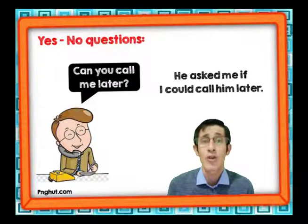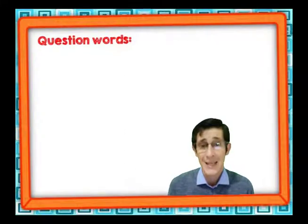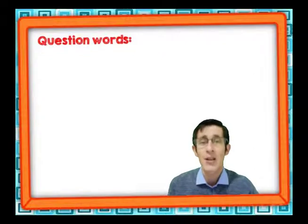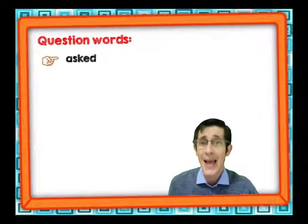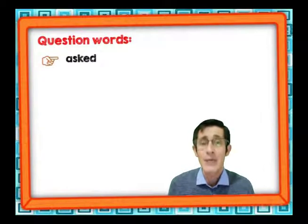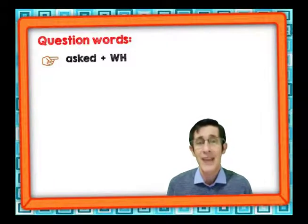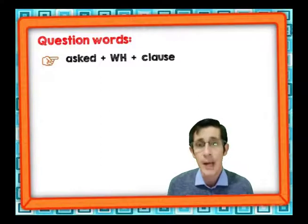Vamos ahora a ver otro tipo de preguntas: las question words, es decir, preguntas que tienen una palabra con WH. La estructura es similar al caso anterior. Empezamos con 'ask' en forma pasada, pero aquí introducimos la palabra WH y concluimos con una cláusula.